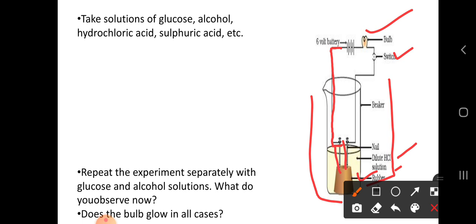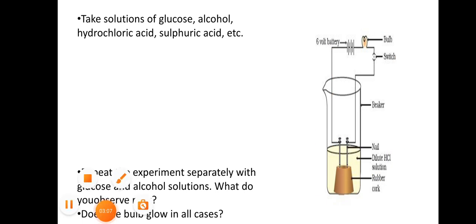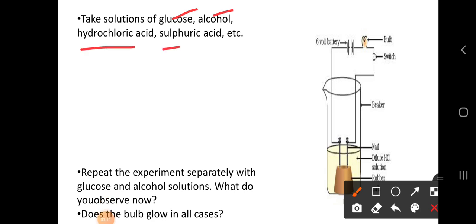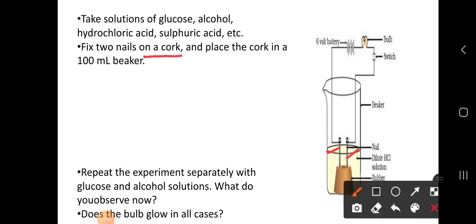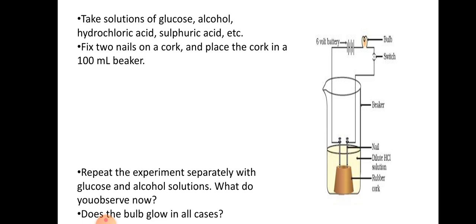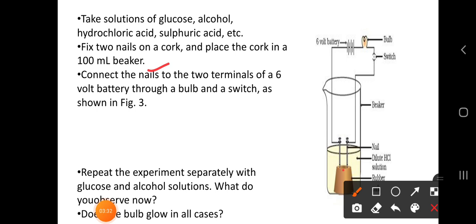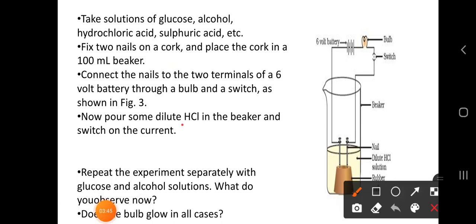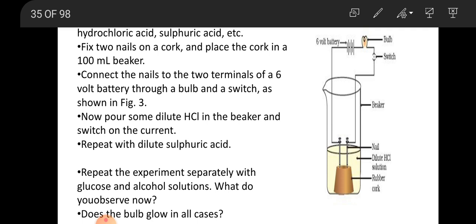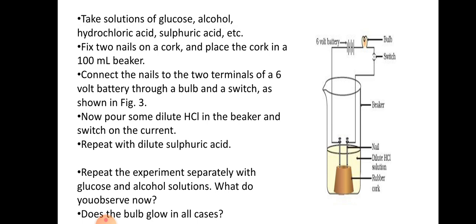This is the apparatus arrangement for the activity. We will discuss the observations shortly. For this experiment we have taken four solutions: glucose, alcohol, hydrochloric acid, and sulphuric acid. Fix two nails on a cork and place the cork in a 100 ml beaker. Connect the nails to the two terminals of a 6-volt battery through a bulb and a switch. Pour some dilute HCl in the beaker and switch on the current. Then repeat with dilute sulphuric acid.